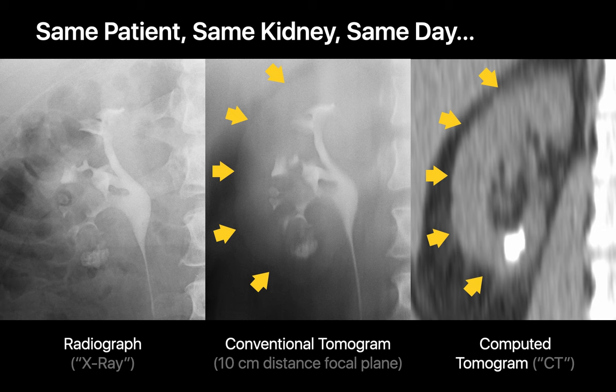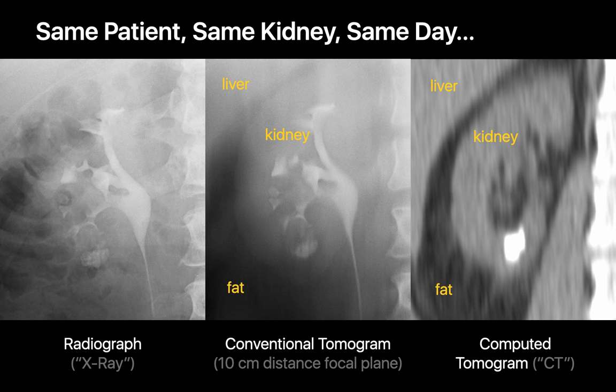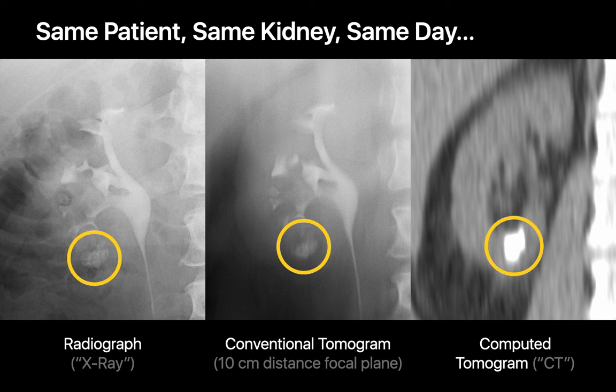Notice that while you can't discern the edge of the kidney on the standard x-ray image, you can see it on the conventional tomogram image, and you can see it really well on the CT image. Also notice how you distinguish the different densities of liver, fat, and kidney on conventional tomography much better than on a standard radiograph, though not quite as dramatically as on the CT image. One weakness of CT, however, is the lower spatial resolution of CT images. Notice how our ability to resolve the fine details and texture of the kidney stone on these images is best on the x-ray, so-so on the conventional tomogram image, and much more limited on the CT image.